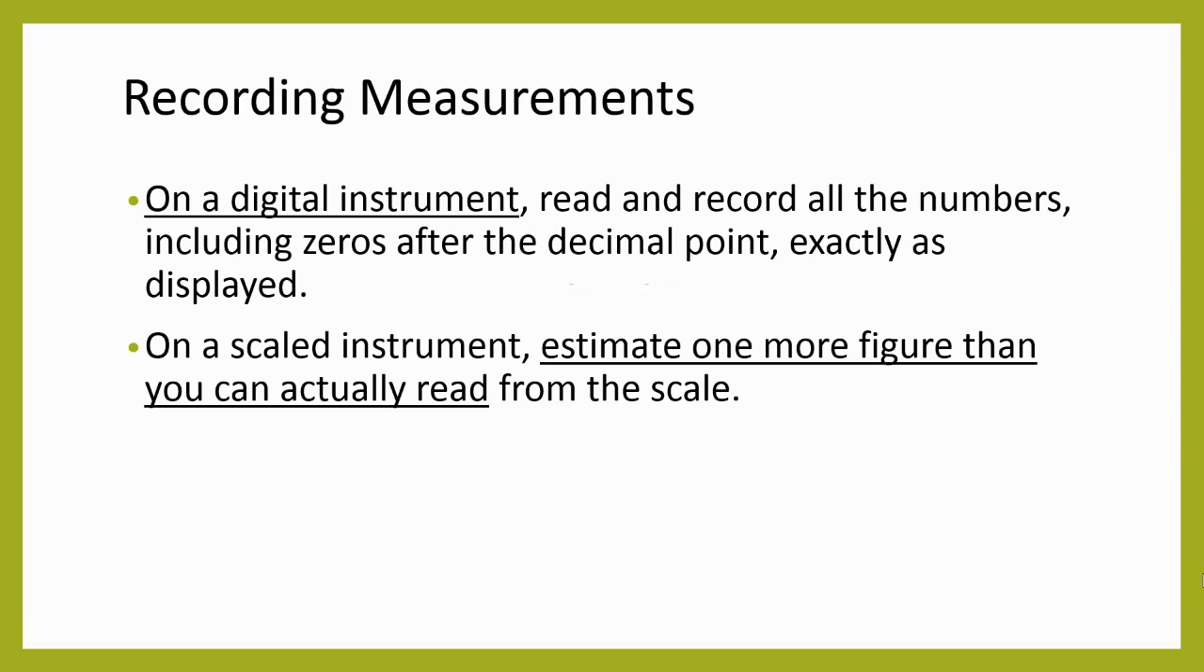Okay, so a really important skill is accurately recording measurements in lab. So it depends partially on what type of equipment we have. If we have digital instruments, something that gives us the exact numbers, such as your cell phone, electronic balances, your calculator, those are all digital instruments. We're going to read and record the numbers exactly as they are given to us, including any extra zeros that might be present after the decimal point.